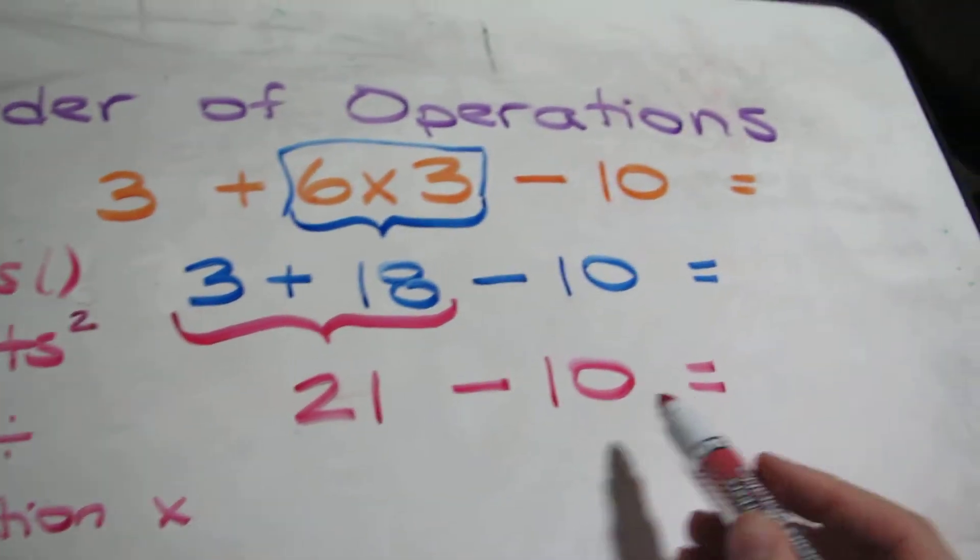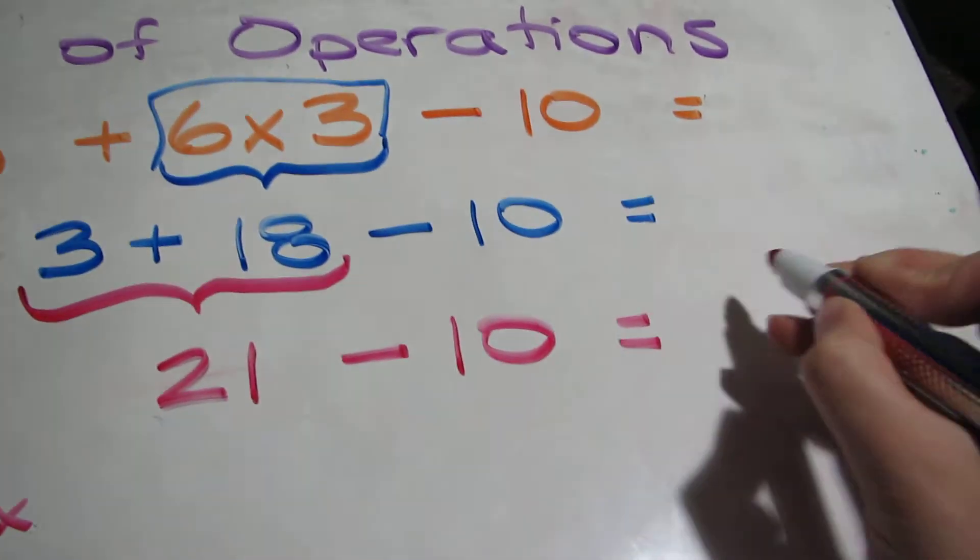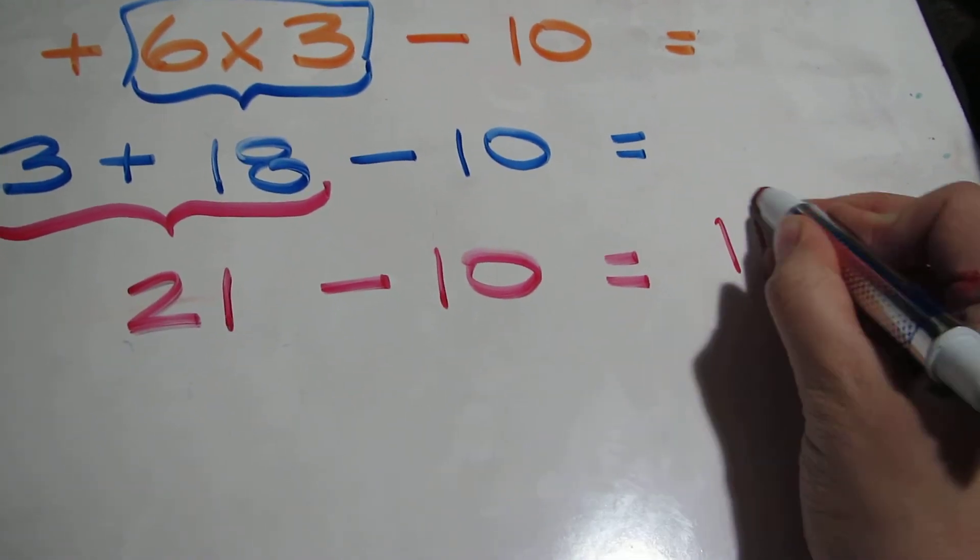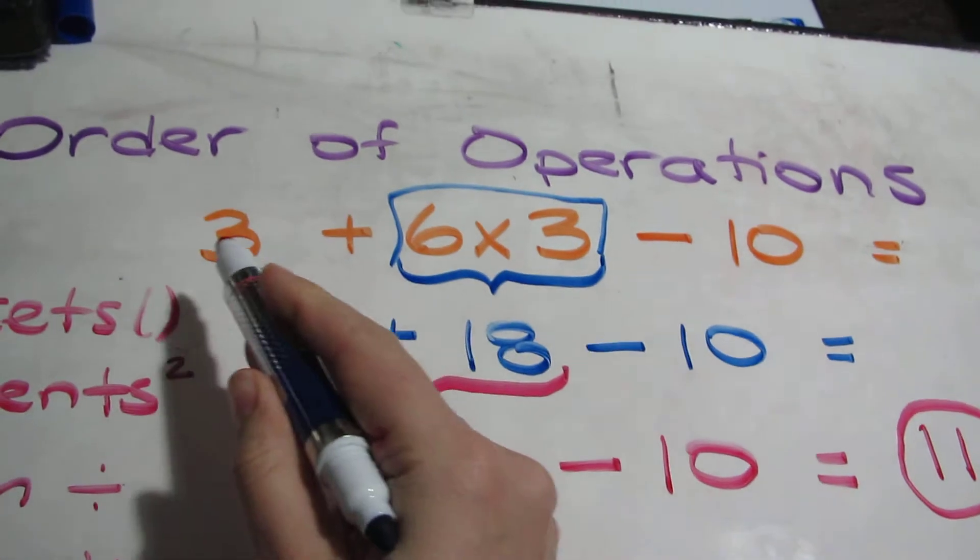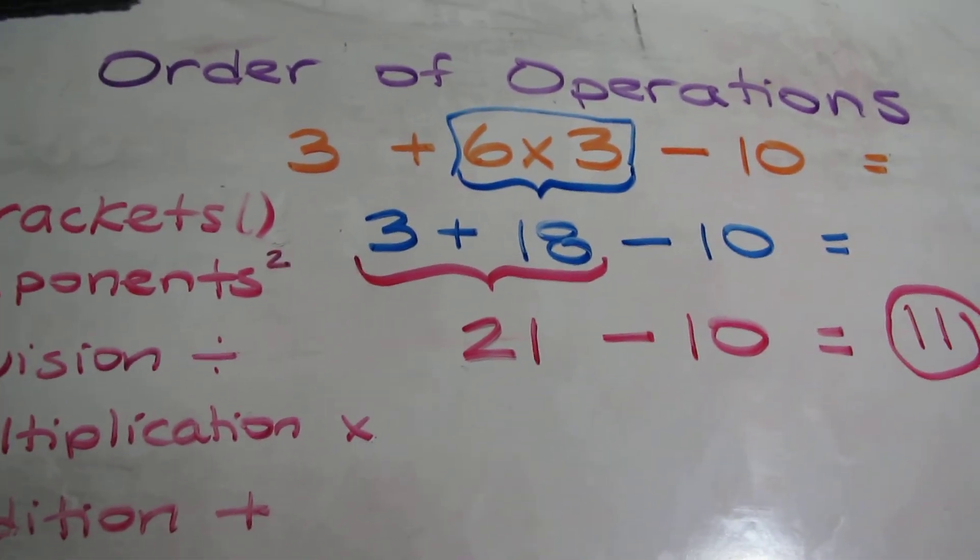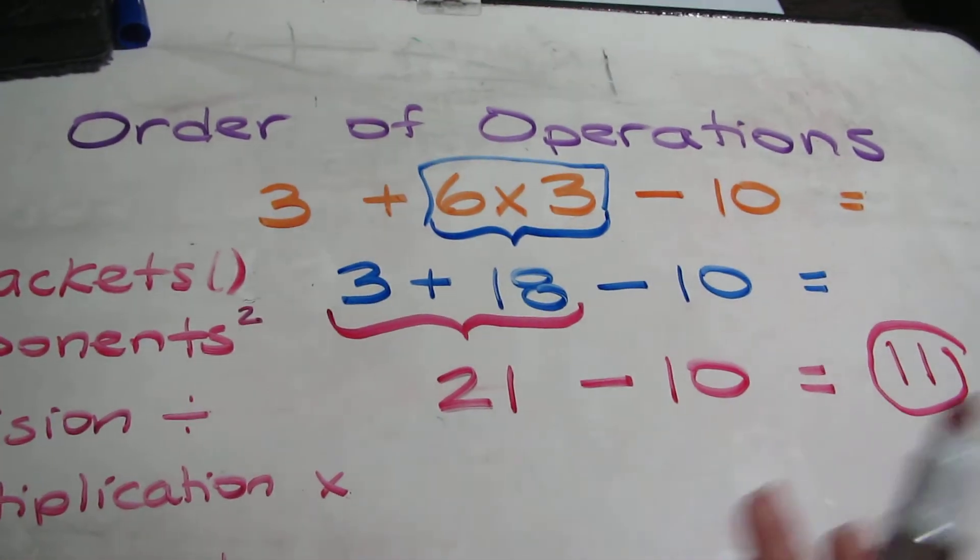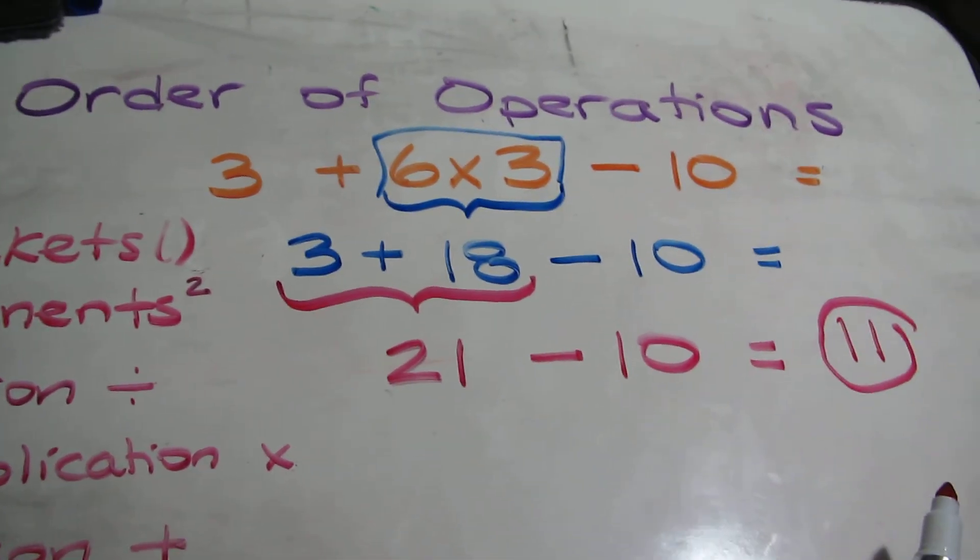All I need to do is 21 - 10, which is 11. There we go. The answer to the large equation is 11, and that is how BEDMAS works. Stay tuned for another video on a more complicated example of BEDMAS as well.